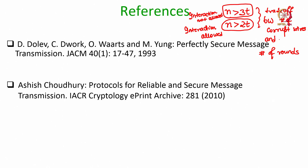These are the references where you can find more about the perfectly secure message transmission problem and the underlying necessary conditions. The problem was introduced in the seminal work by Dolev, Dwork, Waarts, and Yung in 1993, and the speaker's entire PhD thesis was explicitly on the problems of PRMT and PSMT. The thesis is publicly available for more details. Thank you.